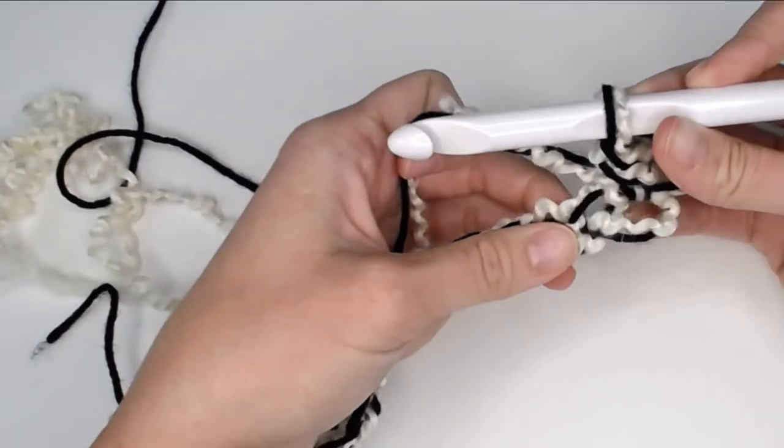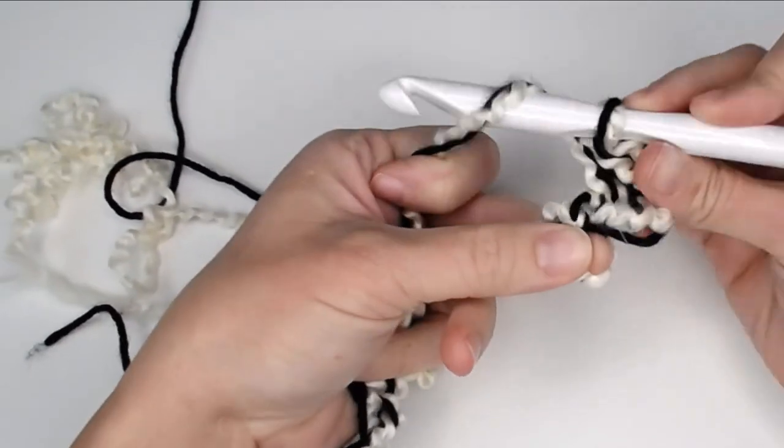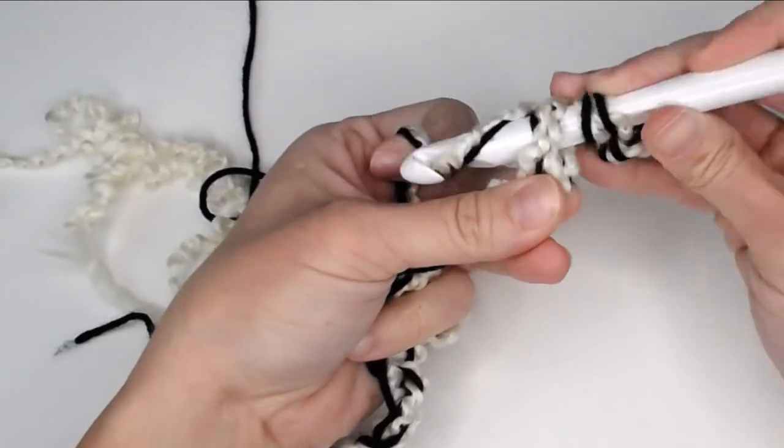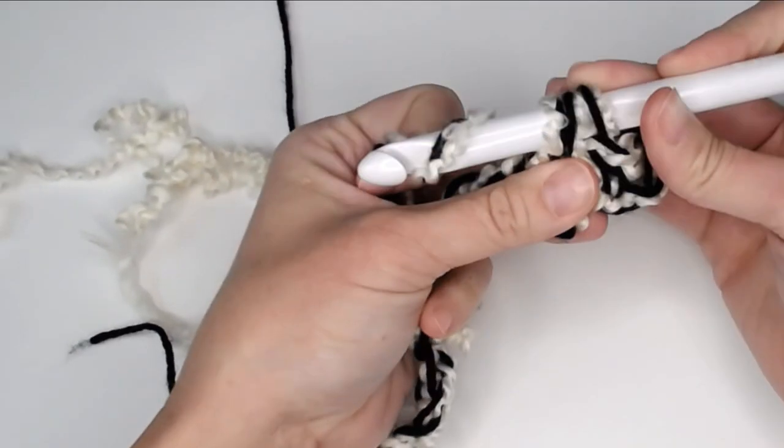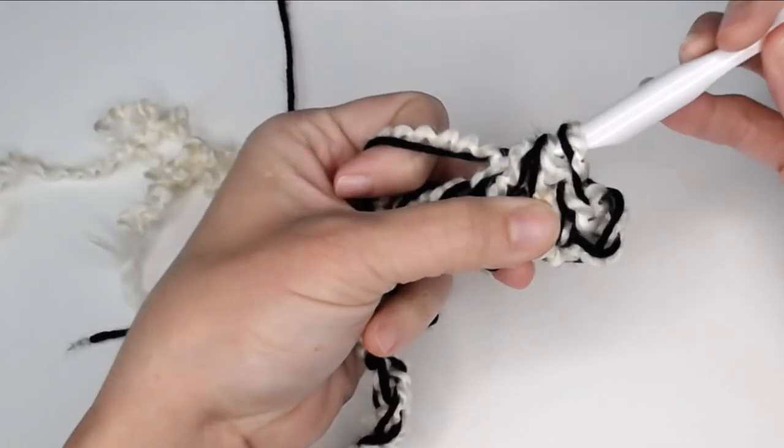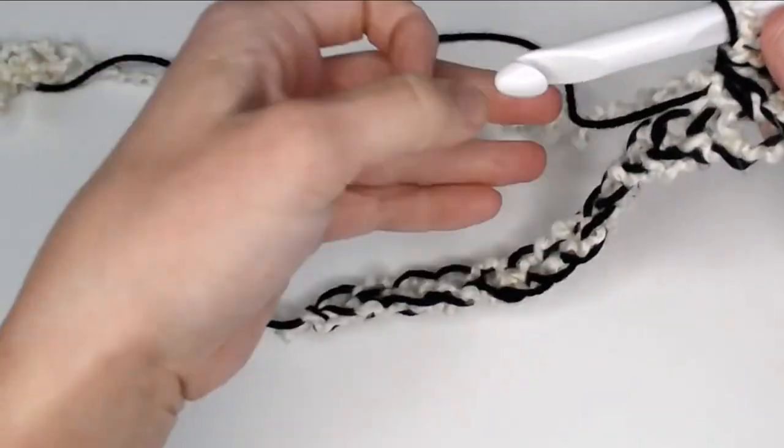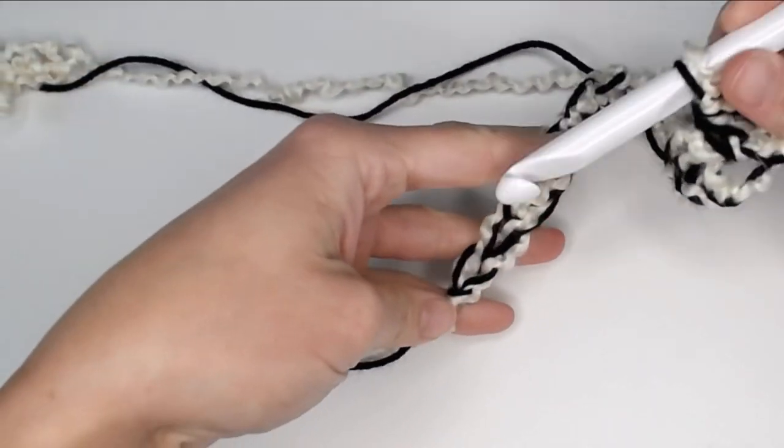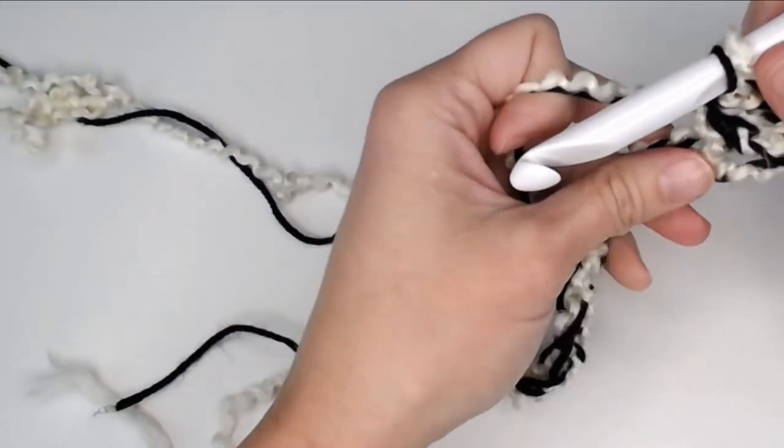Now finding our next stitch. Oh, there is my next stitch right there. Yarn over, insert your crochet hook, pull through, yarn over, pull through all of the loops on your hook. All right, continue to do this all the way down to the very last chain, and I will meet you there to show you what to do next.